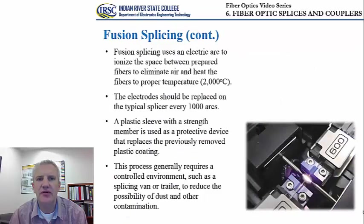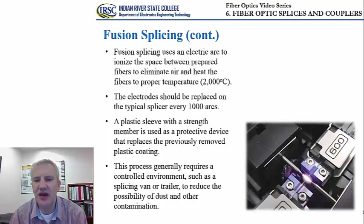Fusion splicing is performed by creating an electric arc using a high current that ionizes the space between the prepared fibers. This process eliminates the air between the two fibers and heats them to the proper temperature of about 2,000 degrees Celsius. The high arc created between the two electrodes ionizes the air, heats the glass, melts it, and ultimately establishes the fusion splice.